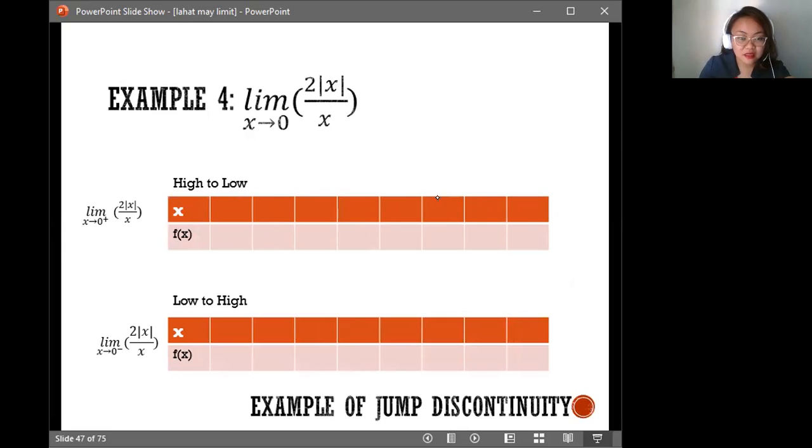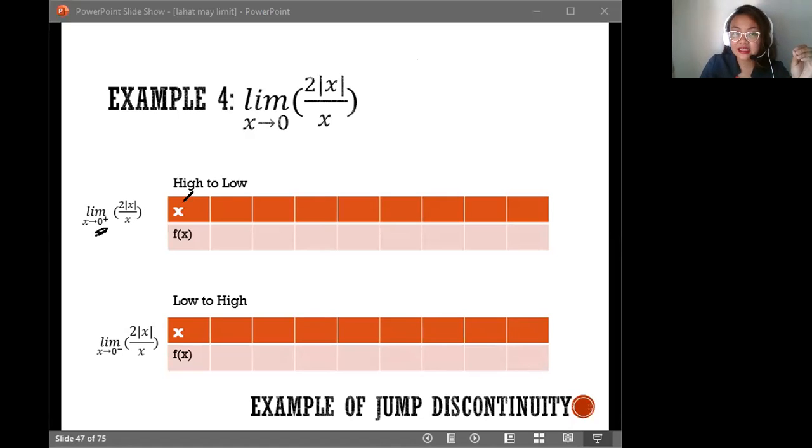As you can see, there are no x values indicated here because I wanted you to learn how to identify the values for x. So high to low, that means we add numbers greater than what your x approaches. So let's start with 2, and then we're approaching 0. Remember, we are approaching 0, so going down to 1.5, 1, 0.5.